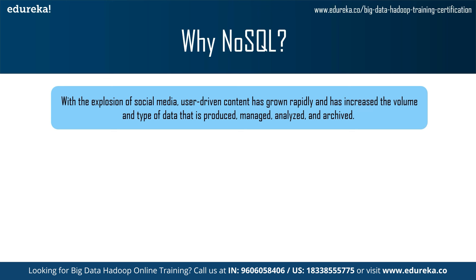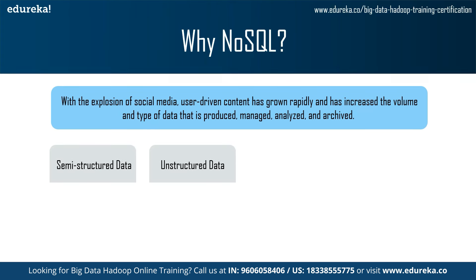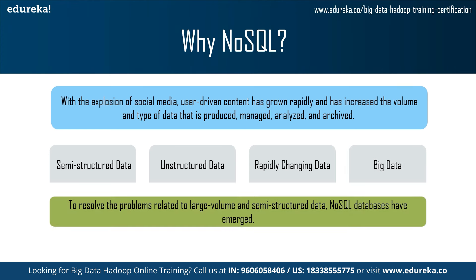The alternative is to distribute database load on multiple hosts whenever the load increases — this method is known as scaling out. NoSQL databases are non-relational, so they scale out better than relational databases as they are designed with web applications in mind. NoSQL databases can handle all sorts of semi-structured data, unstructured data, rapidly changing data, or big data.